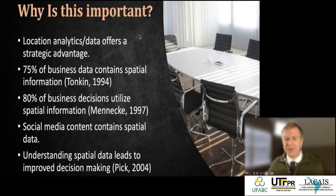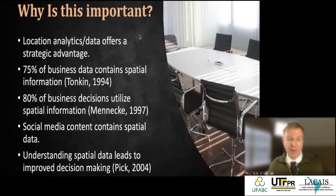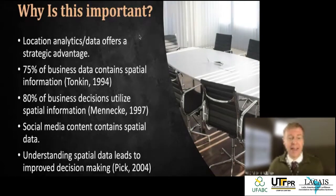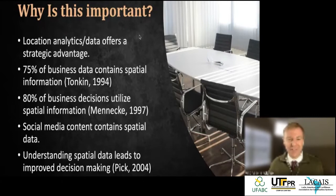Social media content contains spatial data, which is part of why those older statistics are low. With social media we know where people are, which restaurants they visit, where they're posting images from — we can scrape that data and find location tags. This information helps consumers make decisions too: finding an ATM in an unfamiliar city, using navigation on your phone to find a faster route.